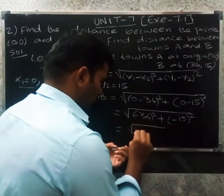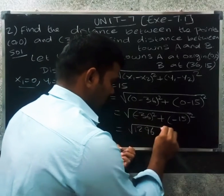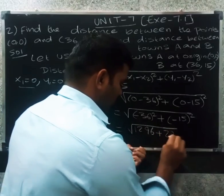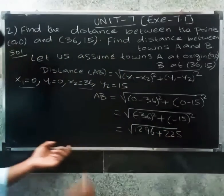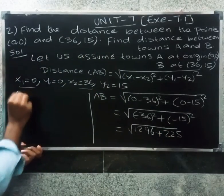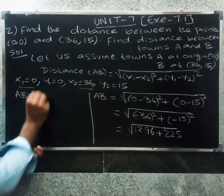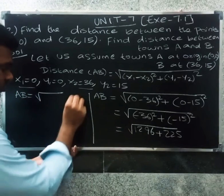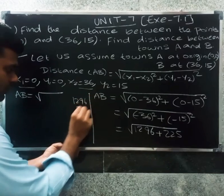So 36 square we will get 1,2,9,6 plus 15 square is 225. So AB equal to root of 1296 plus 225. We can have an addition for that.